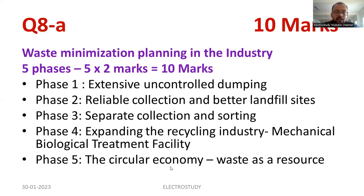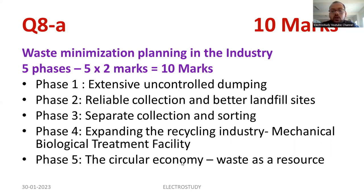Moving on to the last phase: circular economy. From the waste, how to generate income? For example, we have some kind of scrap items — how to produce revenue from scrap items. We have kitchen waste, vegetable waste — how to generate power from the waste, from kitchen waste and such garbage. That is called the circular economy. These are the main things which you need to mention about the five phases of planning.